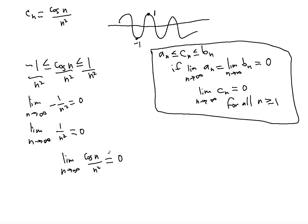So cosine n over n squared is going to be convergent to zero as n increases and goes to infinity.